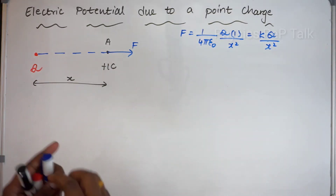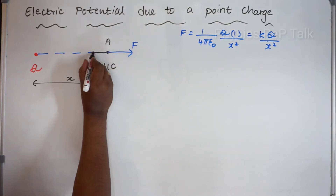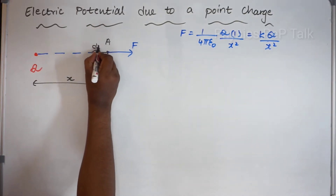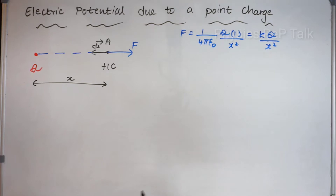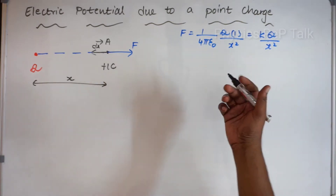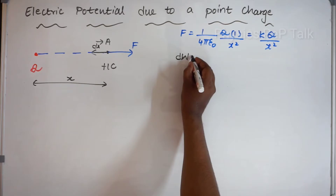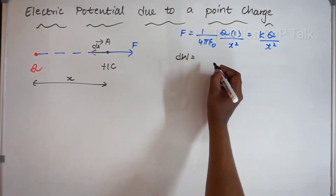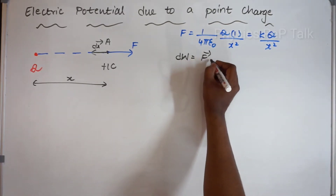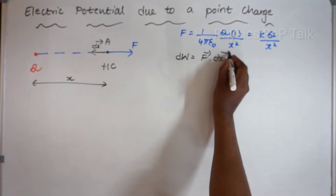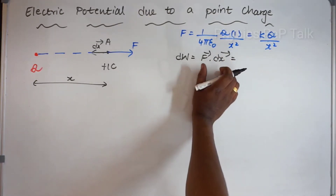I will apply an external force such that it covers a small displacement of dx. The external force will determine the work done. I will call it dW — work done equals force into displacement, that is F times displacement, as a dot product.